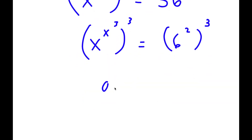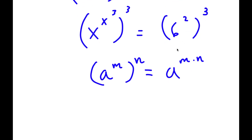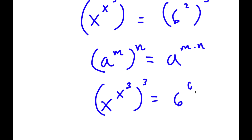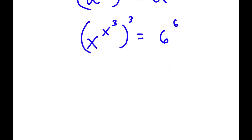Now if I have something in the form a to the power of m to the power of n, this is equal to a to the power of m times n. So 6 to the power of 2 to the power of 3 equals 6 to the power of 2 times 3, and 2 times 3 is 6. So now I have x to the power of x to the power of 3, to the power of 3, is equal to 6 to the power of 6.